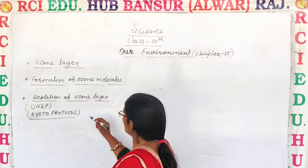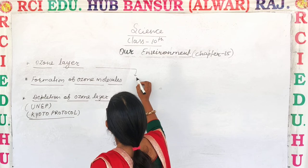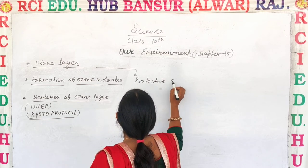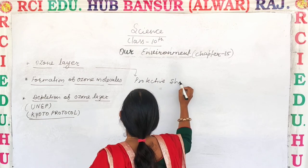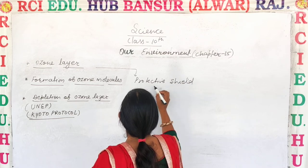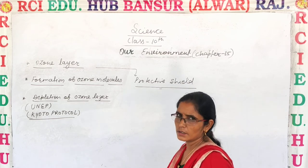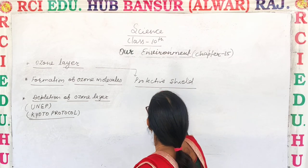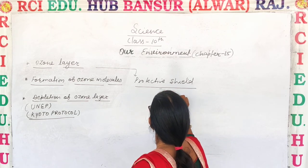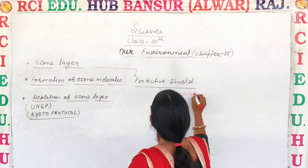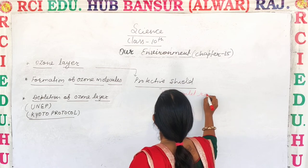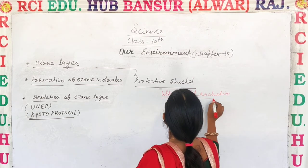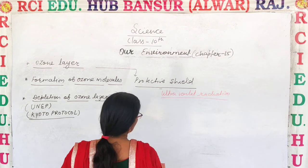What is the ozone layer? The ozone layer is a protective shield around the earth, which protects us from the harmful ultraviolet radiations. What is its function? Try to understand.